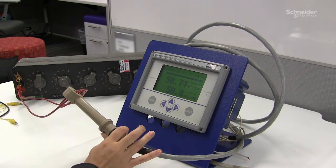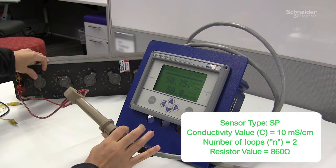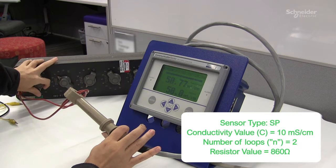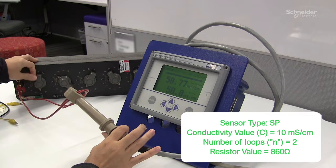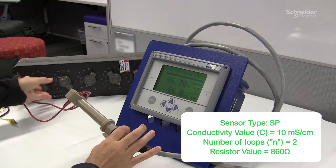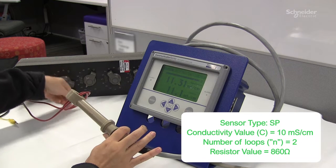And now I'm going to simulate a different conductivity. I'm going to move to 10 millisiemens and for that I believe I require 860 ohms. And again these values are found with the formula we just discussed.